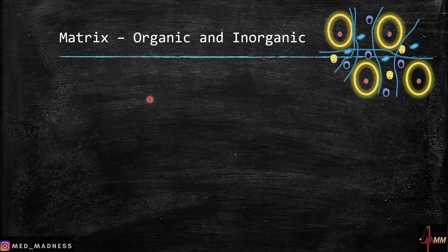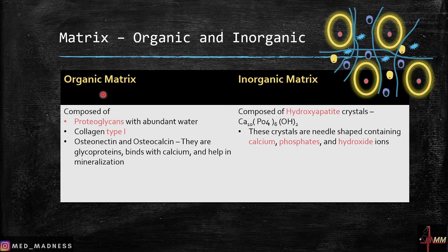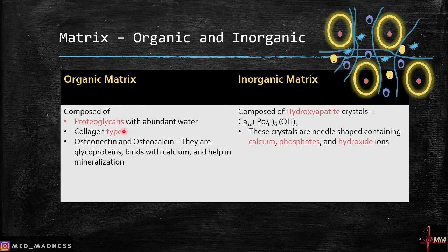The matrix is of two types: organic and inorganic. In the organic matrix you find proteoglycans, which are proteins and carbohydrates — we saw this in the previous chapter — and it contains abundant water. The type of collagen present here is type one. You can remember it with the mnemonic: bone — B-O-N-E, O-N-E — for type one.